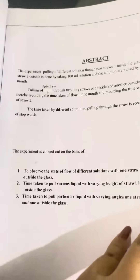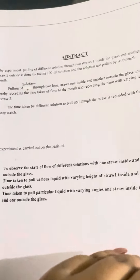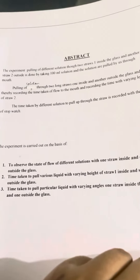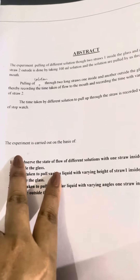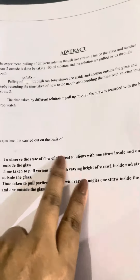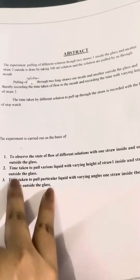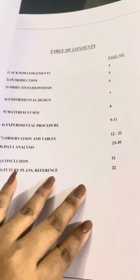Your second page is the abstract page. The abstract is written as per the topic. The experiment is carried out on the basis of certain points. Then the table of contents follows.